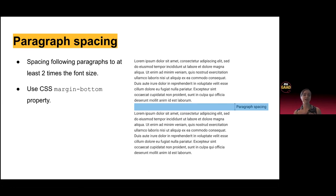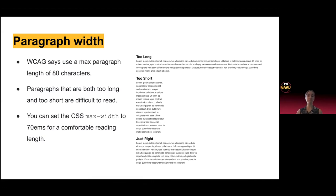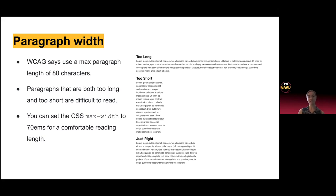Paragraph spacing — spacing following paragraphs should be at least two times the font size; use the margin-bottom property for this. Paragraph width — the guidelines say use a max paragraph length of 80 characters. This is a bit longer than graphic design recommendations, which are typically more like 55 to 70. Paragraphs that are both too long and too short can be really difficult to read — it's easy to lose your place on things that are too long, and too short means you're constantly moving to a new line. You can set the CSS max-width to 70ch for a comfortable reading length, more in line with the 80 characters.